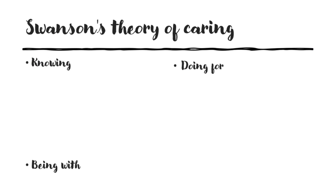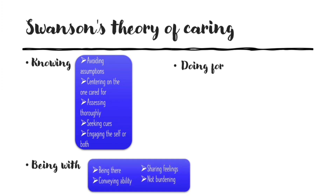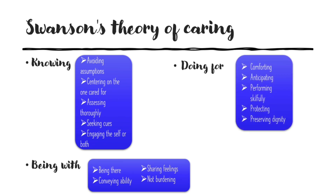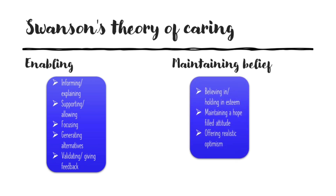So today we have learned about Swanson's Theory of Caring, which consists of five concepts, each with its own sub-dimensions. First concept is Knowing — sub-dimensions are avoiding assumptions, centering on the one cared for, assessing thoroughly, seeking cues, and engaging the self or both. Next is Being With — being there, conveying ability, sharing feelings, and not burdening. Then Doing For — comforting, anticipating, performing skillfully, protecting, and preserving dignity. Fourth concept is Enabling — informing or explaining, supporting or allowing, focusing, generating alternatives, and validating or giving feedback. Last concept is Maintaining Belief — believing in or holding in esteem, maintaining a hope-filled attitude, and offering realistic optimism. That's all for today. If you like this video, please like, share, and subscribe to my channel. Thank you for watching.